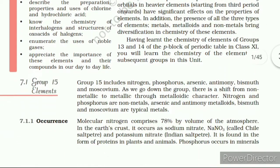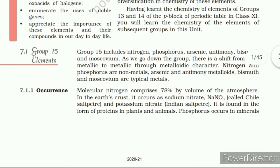7.1 Group 15 Elements. Group 15 includes nitrogen, phosphorus, arsenic, antimony, bismuth, and moscovium. As we go down the group there is a shift from non-metallic to metallic through metalloid character. Nitrogen and phosphorus are non-metals, arsenic and antimony are metalloids, and bismuth and moscovium are typical metals.